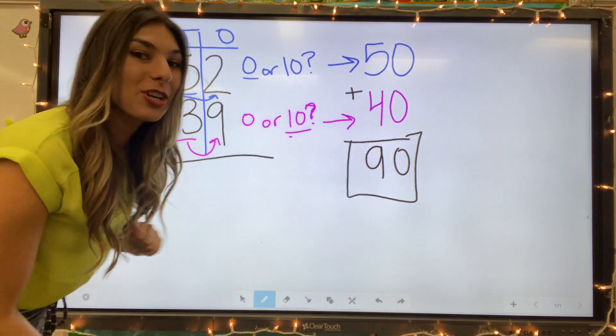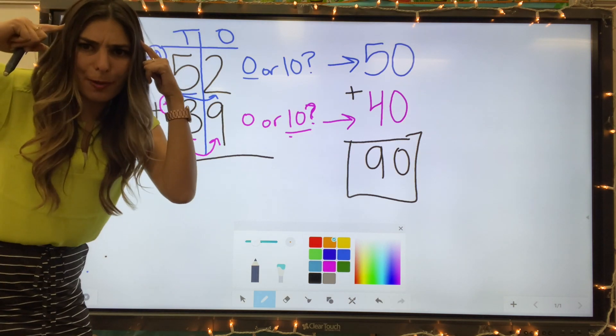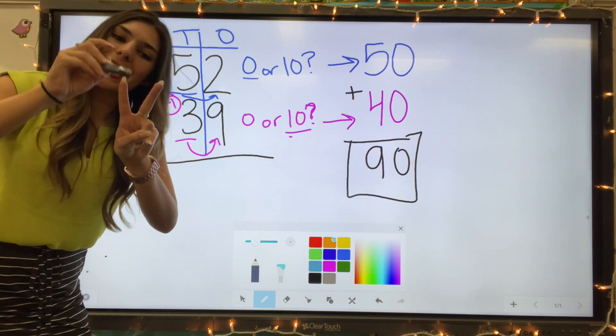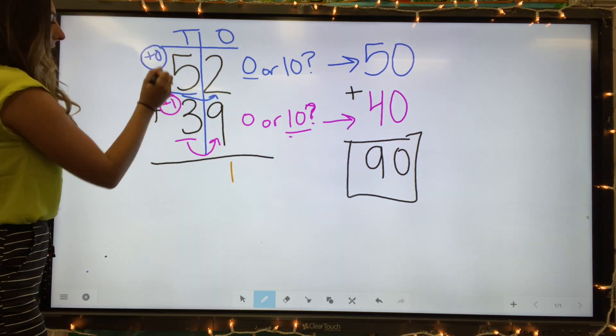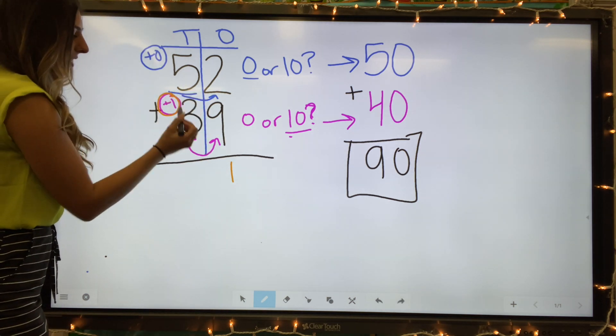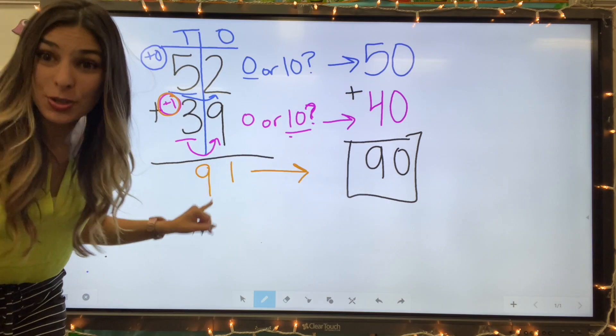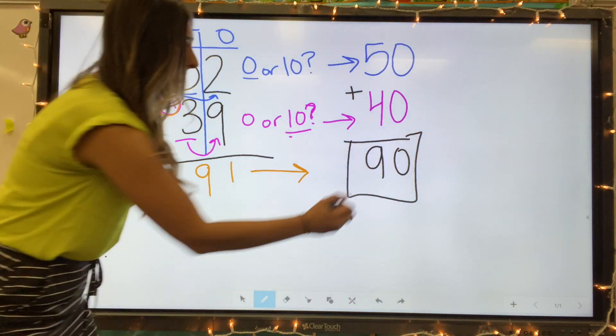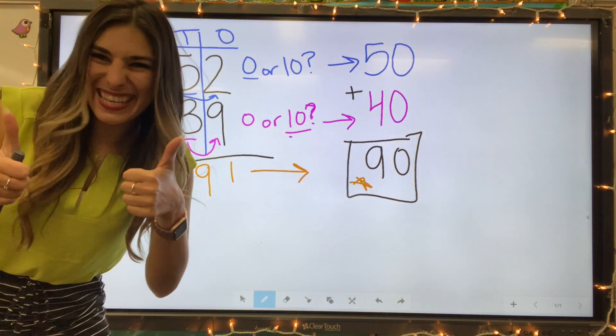As always, let's double check our answer. Two plus nine. I'm going to put the biggest number in my head. Two on my fingers. Nine, ten, eleven. Eleven. And here's that one that we carry. Five plus three equals eight plus one equals nine. So we had 91 and we rounded it down to 90. So this is accurate.